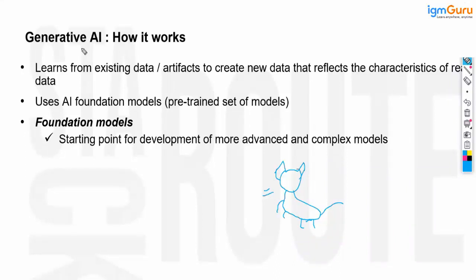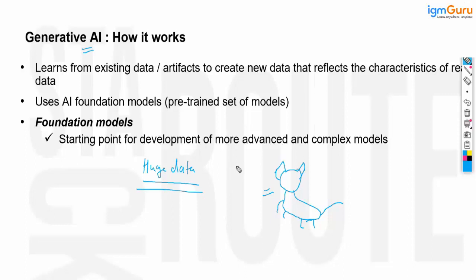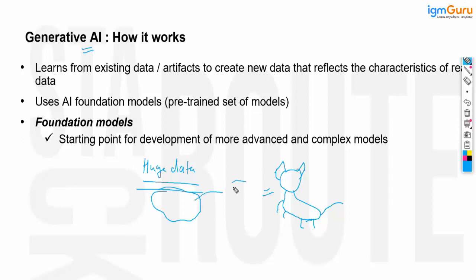This is how generative AI works. In generative AI, the models are trained on very huge data. During the learning process, these models learn how the data looks in a particular case, and now if you ask them to generate the same data, the model has the capability to generate similar data.